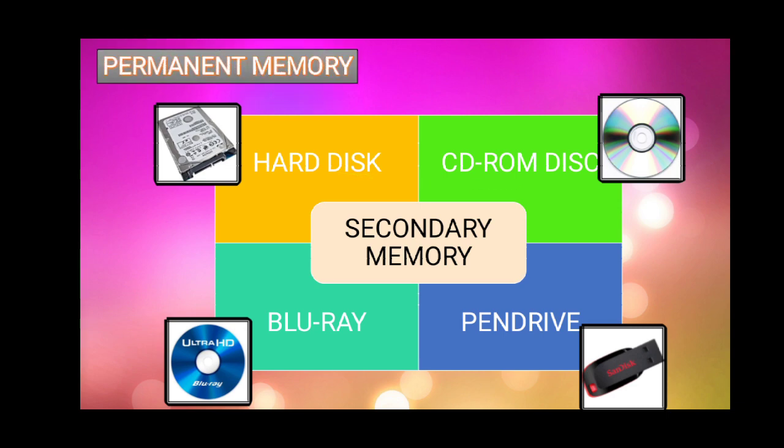So all these things — CD, Blu-ray, pen drive — come in permanent memory, secondary memory. I have told you this is a permanent type of memory. You will find your pictures or data easily even years later. This is a very, very accurate and very usable type of memory.